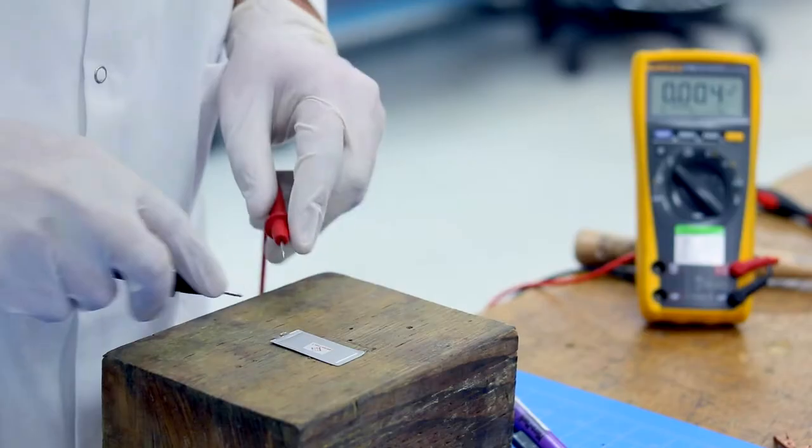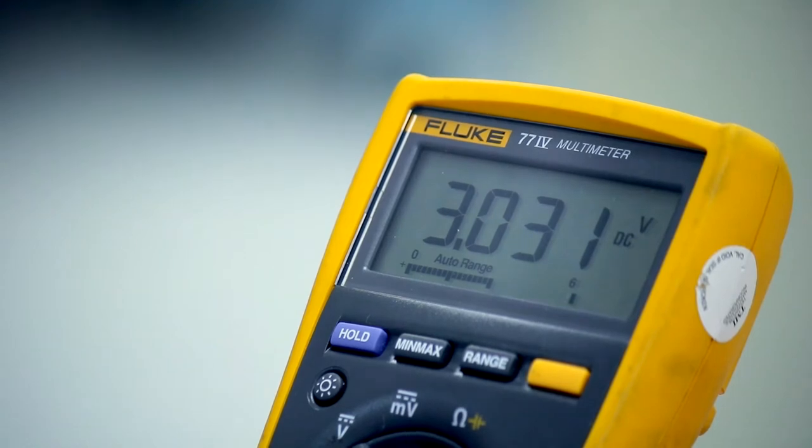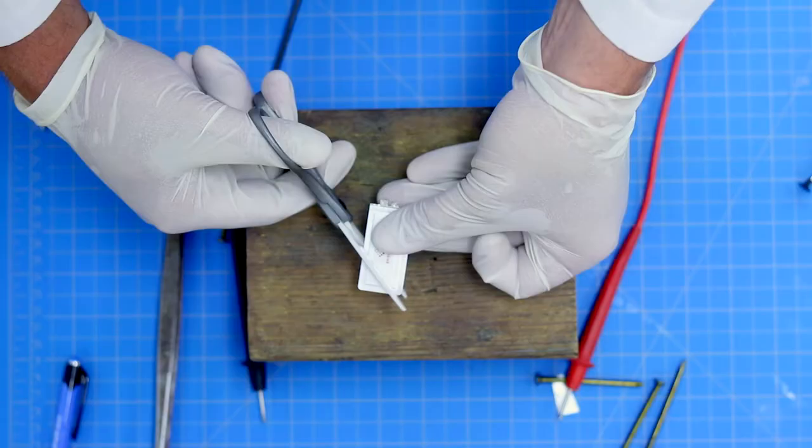So let's check the voltage before we start the tests. 3.031. Now let's see what happens when the bright-volt battery gets cut in half.